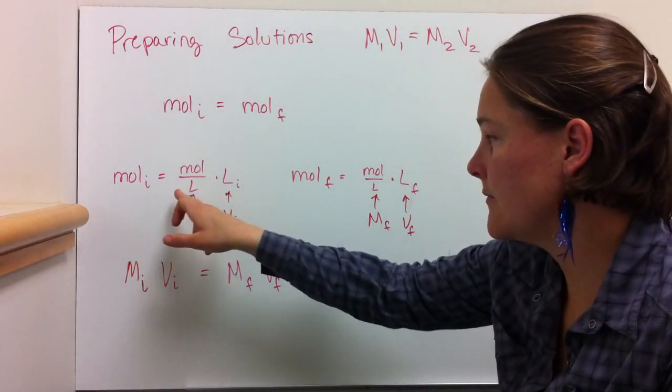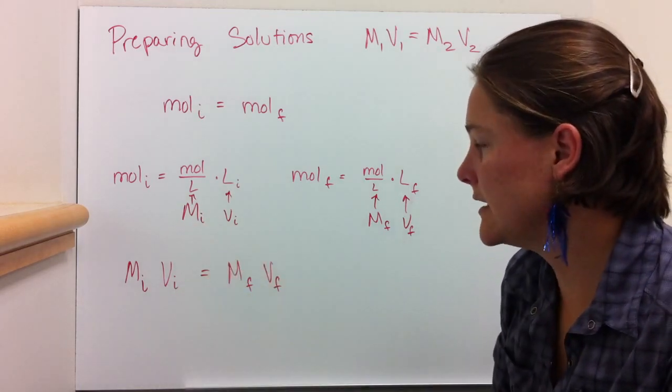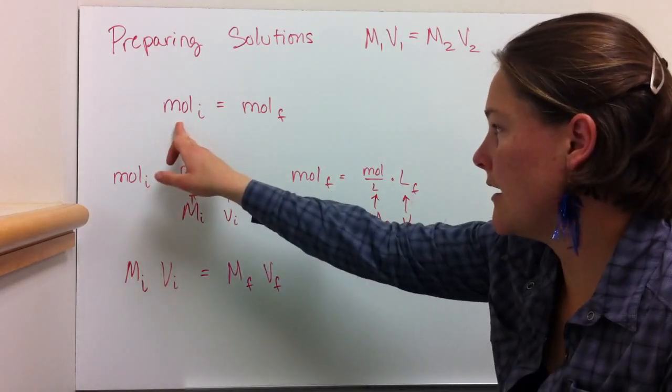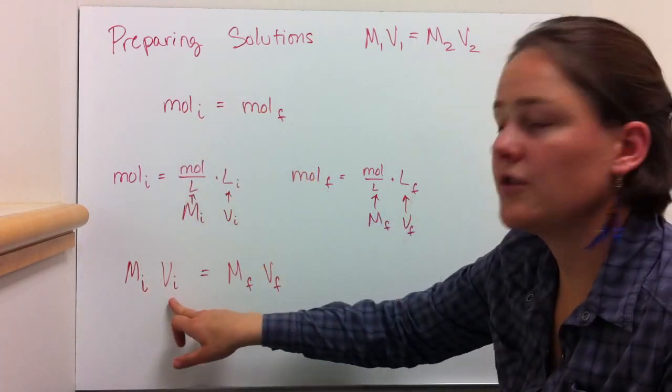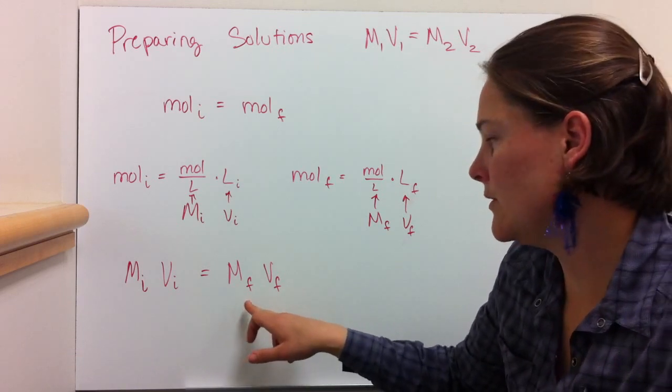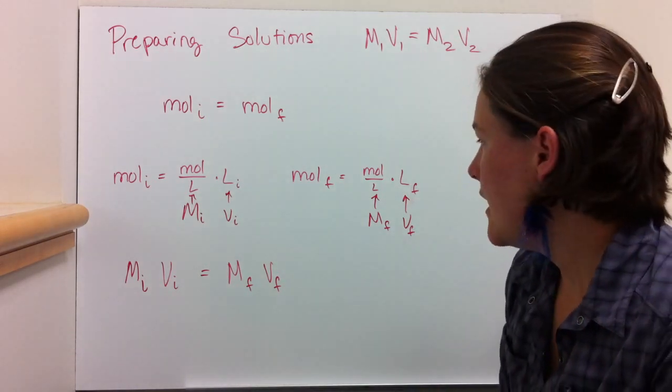That's M1V1 basically. So if you know that moles initial equals moles final, then you have molarity initial times volume initial equals molarity final times volume final. That's super helpful.